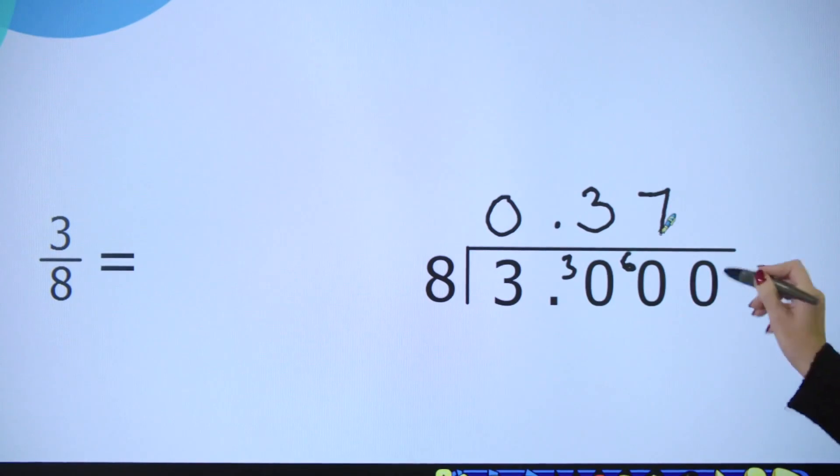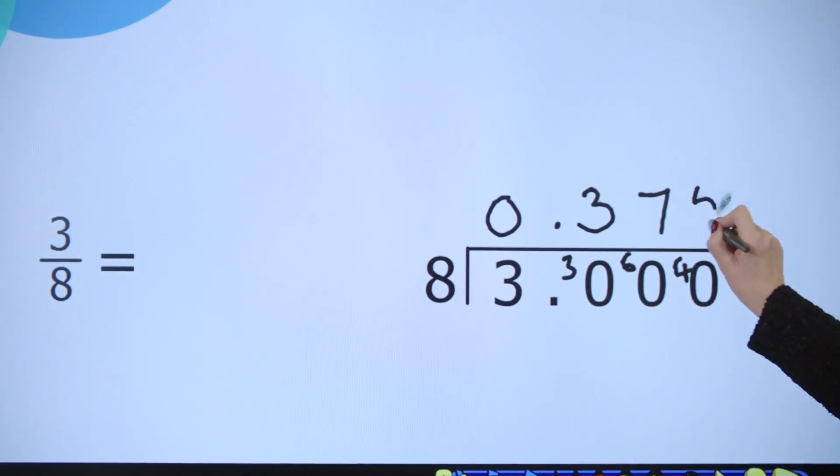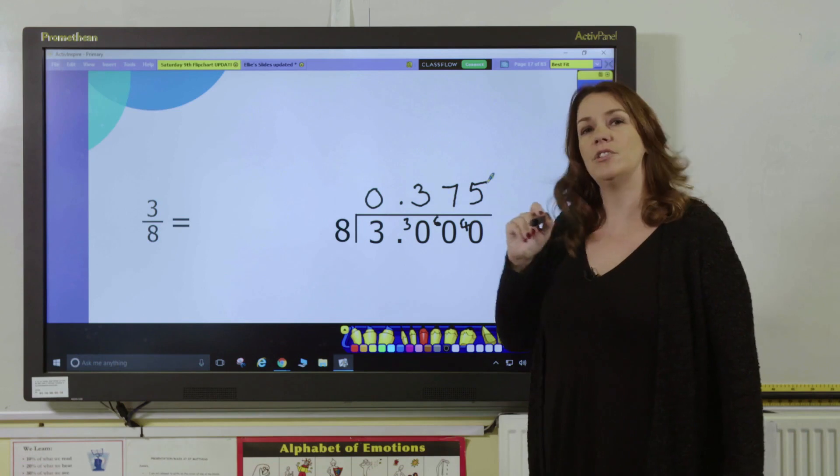I have 4 remaining, so I'm going to put that in my thousandths column, giving me 40 thousandths. How many eights are in 40? 5 × 8 = 40, so I can put my 5 here, and I've finished dividing.